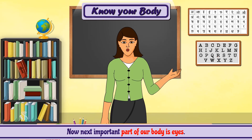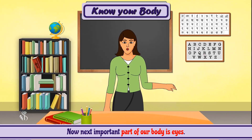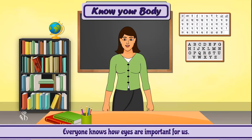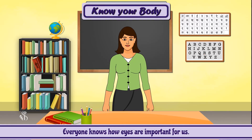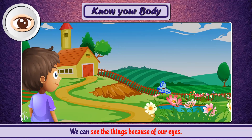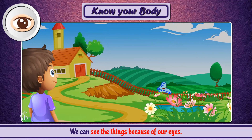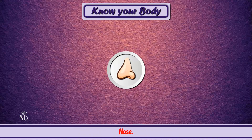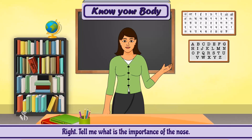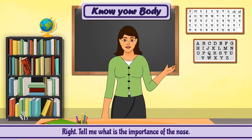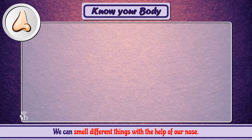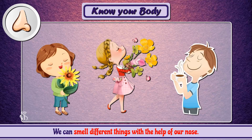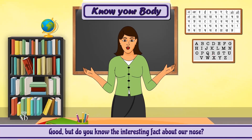The next important part is our eyes. Everyone knows how important eyes are for us — we can see things because of our eyes. Which part is situated below our eyes? The nose, right. Tell me, what is the importance of the nose? We can smell different things with the help of our nose.